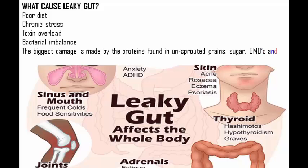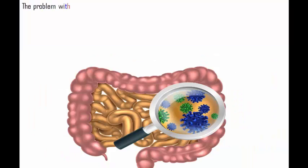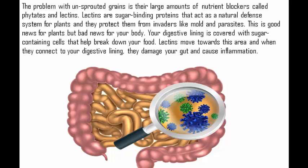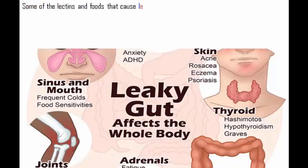What causes leaky gut? Poor diet, chronic stress, toxin overload, and bacterial imbalance. The biggest damage is caused by proteins found in unsprouted grains, sugar, GMOs, and conventional dairy. Unsprouted grains contain large amounts of nutrient blockers called phytates and lectins. Lectins are sugar-binding proteins that act as a natural defense system for plants, protecting them from invaders like mold and parasites. However, your digestive lining is covered with sugar-containing cells, and when lectins connect to your digestive lining, they damage your gut and cause inflammation.